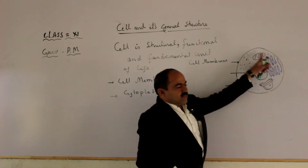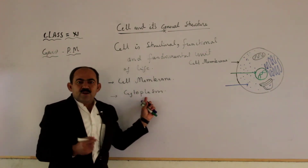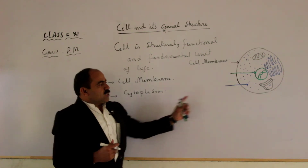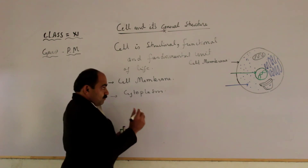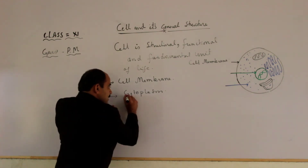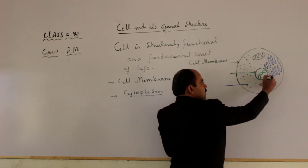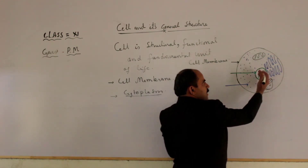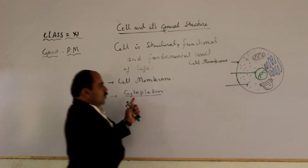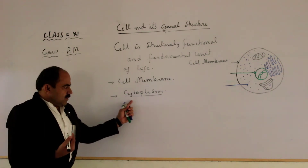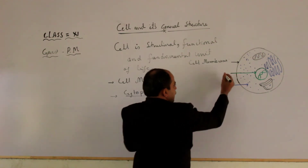The second component is the cytoplasm. Cytoplasm is the semi-transparent, jelly-like, viscous material present throughout the cell body. This cytoplasm is separated from the protoplasm due to the presence of the nucleus. If we exclude the nucleus, this material is known as the cytoplasm.